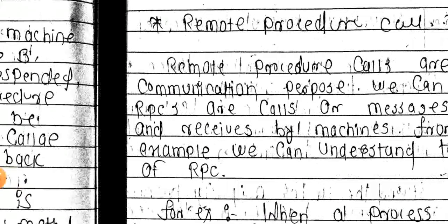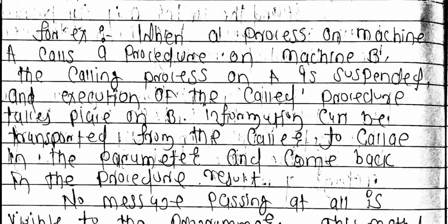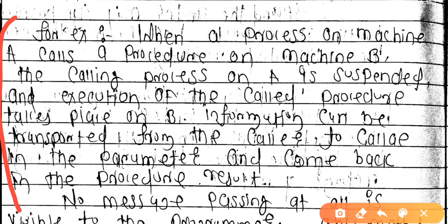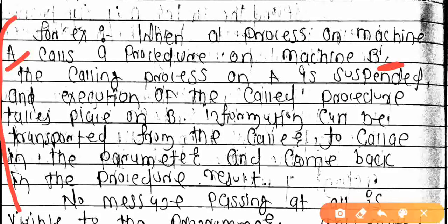Let's see the example. When a process on Machine A calls a procedure on Machine B, the process on Machine A is suspended, and execution of the called procedure takes place on Machine B. Machine A sends a message to Machine B — similar to how we send a WhatsApp message to someone else.